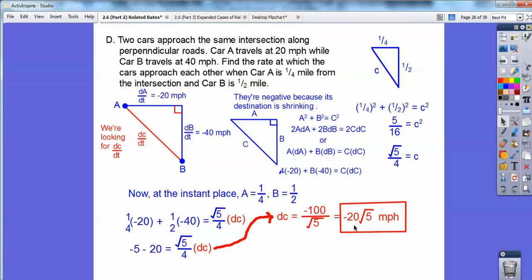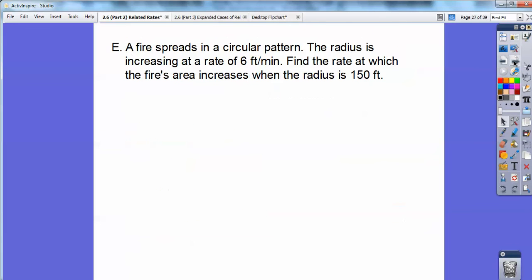And you know, you might want to change that to a decimal. And it's negative because they're getting closer to each other. All right. Let's try one more of these, you guys. So fire spreads in a circular, actually two more, in a circular pattern.